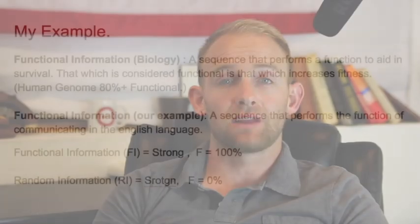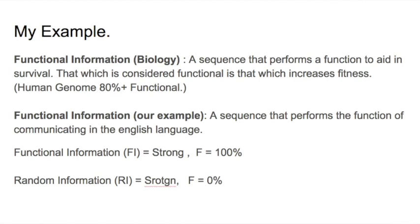It sounds good, but there are two big problems that are best illustrated by an example that shows how random mutations and selection actually function. So let's set up this example. First, we have to keep in mind that in order to have an organism, you need functional information, because these functions are what allow an organism to survive. So in biology, functional information are sequences that aid in the survival or fitness of an organism. In our example, functional information will be sequences that communicate in the English language. So for instance, we can see that the word strong is 100% functional. And we can see that if we scramble those same letters into a random sequence, they are 0% functional.